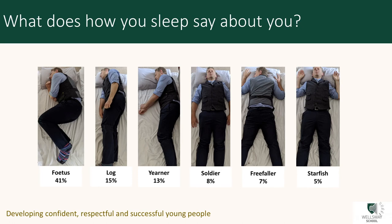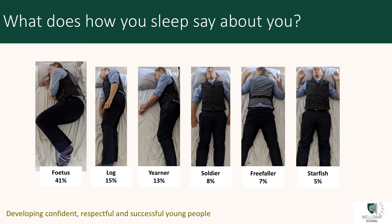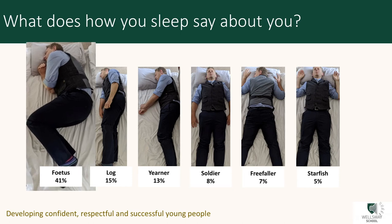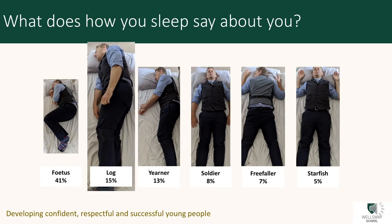The most common position people fall asleep in is called the foetus. Those curled up in the foetus position are described as tough on the outside but sensitive at heart — they may be shy when they first meet somebody, but they soon relax. In fact, 41% of the 1,000 people who took part in the survey slept like this, with more than twice as many women as men. The log — lying on your side with both arms down by your sides — these sleepers are easy-going, social people who like being part of the in-crowd. They are trusting of strangers, but may be gullible.